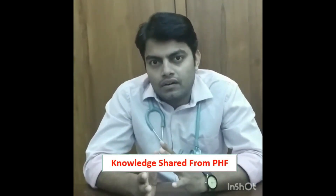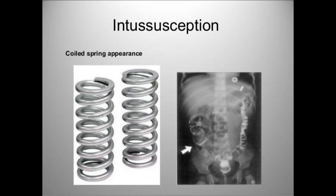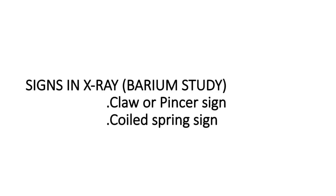By x-ray or radiology — specifically contrast x-ray — in barium meal, the signs are the claw sign or pincer sign, and the coiled spring appearance. So in radiology there are two signs: claw or pincer sign, and coiled spring appearance.